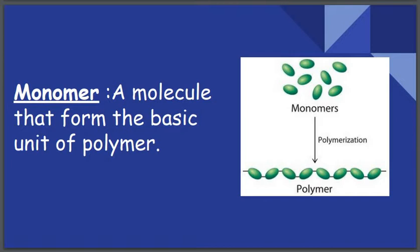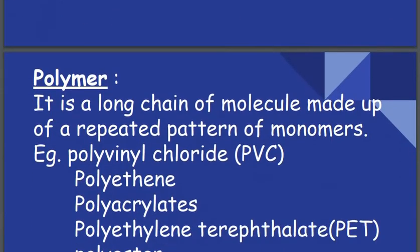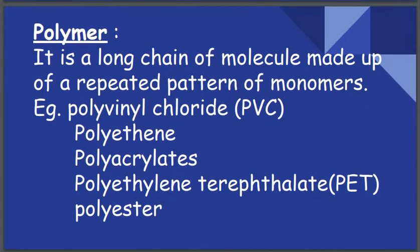Next, we will look at monomers and polymers. A monomer is a molecule that forms the basic unit of a polymer. Monomers combine together to form a long chain called a polymer, which is a long chain of molecules made up of a repeated pattern of monomers.